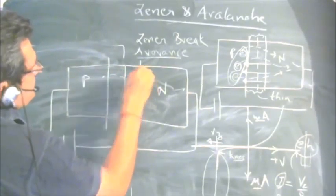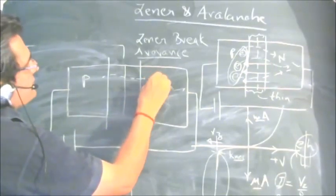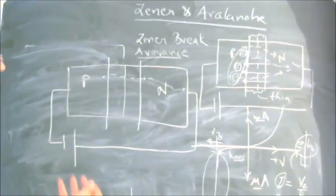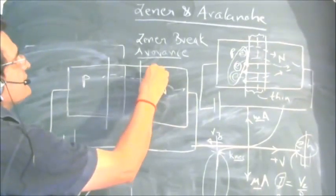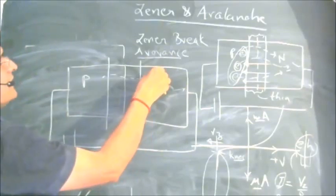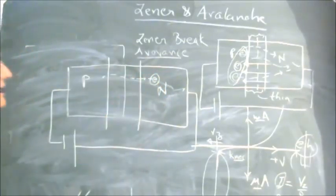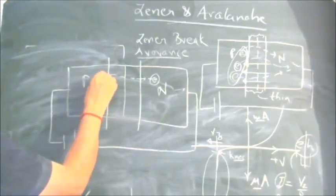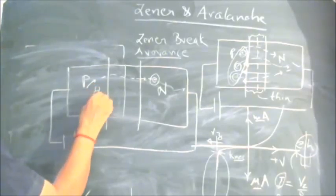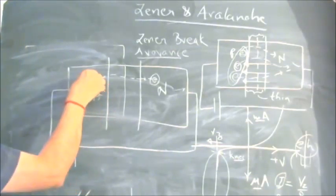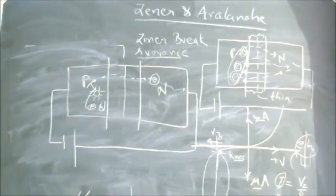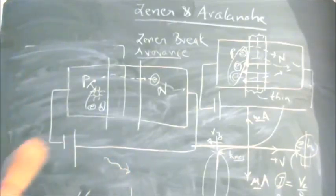In avalanche breakdown, electrons crossing over as minority carriers acquire enough energy, which translates into high velocity. These electrons, while crossing over due to reverse bias, are also colliding with atoms in the crystal. When they collide with the crystal atoms, electron-hole (E-H) pairs are created.